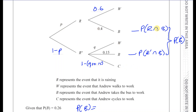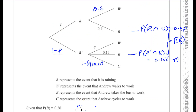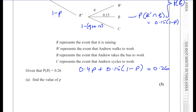So this is P, this is 0.4, so this equals 0.4 times P. And this is 1 minus P and this is 0.15, so this equals 0.15 times 1 minus P. Those two added together give us a probability of B which is 0.26. So we can write: 0.4P plus 0.15 times (1 minus P) equals 0.26.